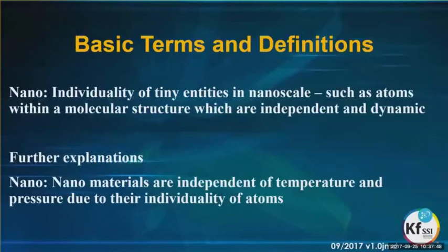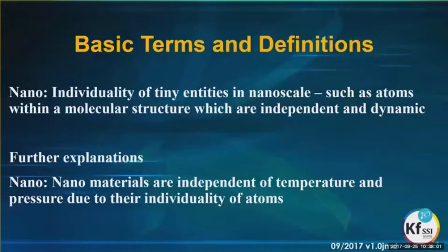In terms of the basic terms and definitions for nano, when we're talking on a plasma basis, it's the individuality of tiny entities in nanoscale, such as atoms within a molecular structure, which are independent and dynamic. So nanomaterials are independent of temperature and pressure due to their individuality of atoms.